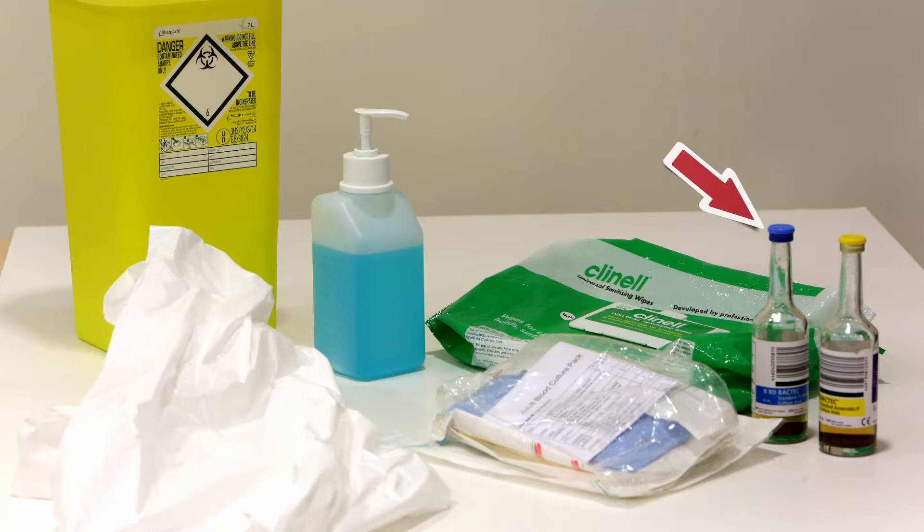A set of blood culture bottles usually consisting of an aerobic and anaerobic bottle, alcohol hand rub which can be found at the patient's bedside, clinical wipes, and a tourniquet.